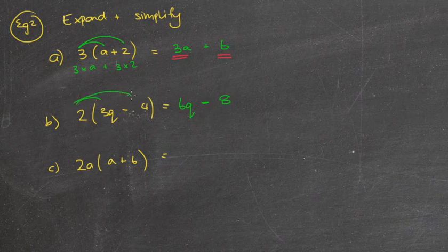The last one here. 2a times a. Well, 2a times a, from the last tutorial, was 2a squared. There's a plus sign there. 2a times 6 makes 12a. Alrighty.